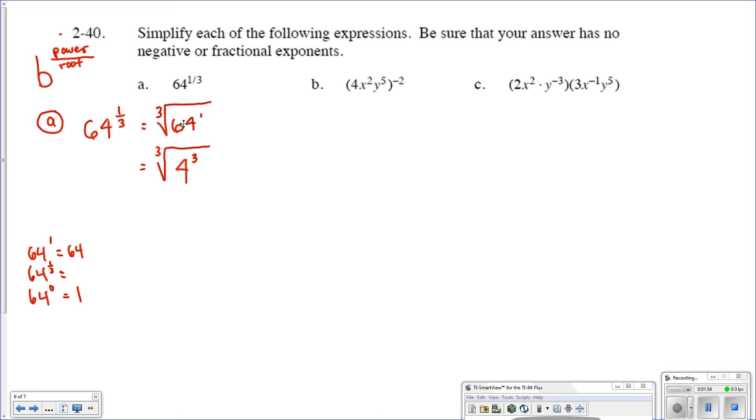You could also just do the cube root of 64. In this case, my power of 3 and my root of 3 would cancel each other out. This is the same thing as saying 4 to the three-thirds power, which ends up being just 4. So 64 to the one-third power equals 4. Remember, these will cancel each other out. That's the inverse operation. If you cube something and then take the cube root, it's the same thing.